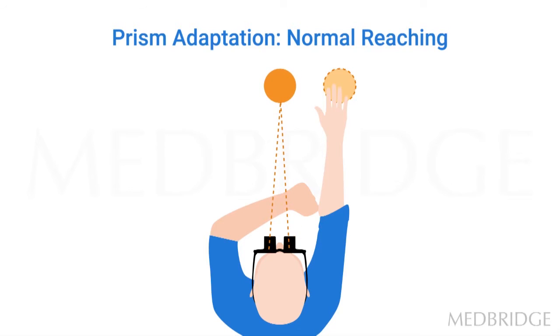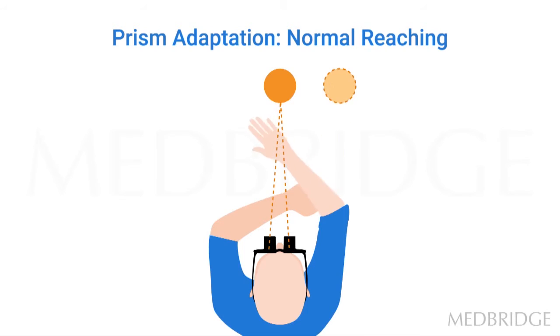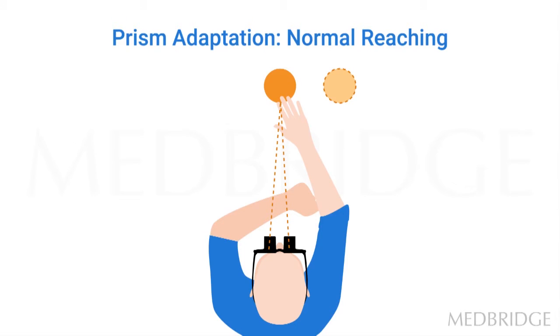Over a course of several reaches, the individual learns to adjust the reach so that the reach now contacts the object despite the fact that the image still looks like it's to the right. In this way, the proprioceptive match and the visual map are realigned with each other. That's called the direct effect.